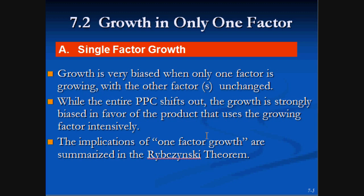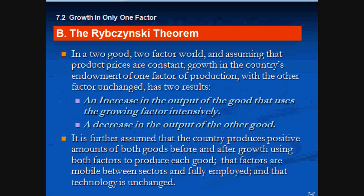The implications of one-factor growth are summarized in the Rybczynski theorem. In a two-good, two-factor world, assuming that product prices are constant, growing a country's endowment of one factor of production while the other factor remains unchanged has two results: first, an increase in the output of the good that uses the growing factor intensively, and second, a decrease in the output of the other good.